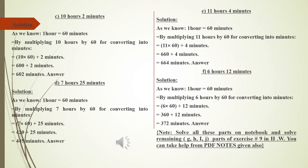Look at part C: 10 hours and 2 minutes. First we multiply 10 hours by 60, giving us 600 minutes. Then we add 2 minutes, so the answer is 602 minutes. The remaining parts are solved the same way.